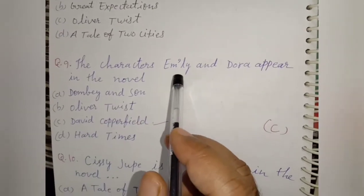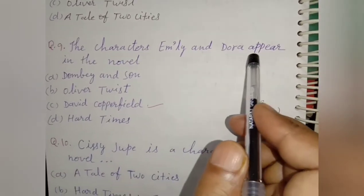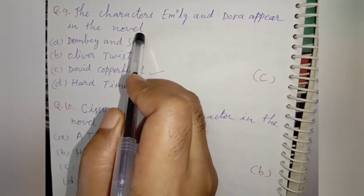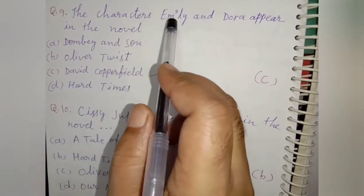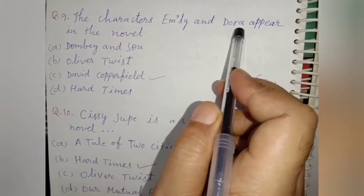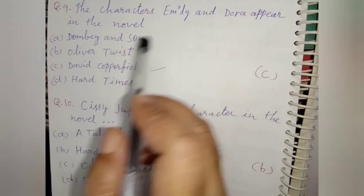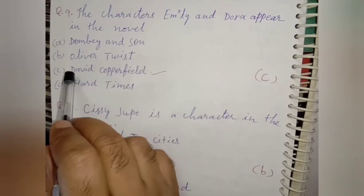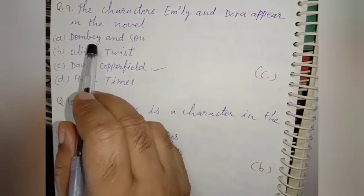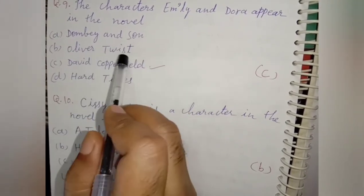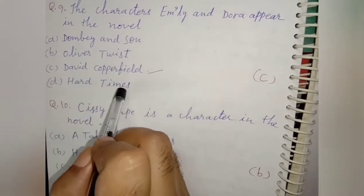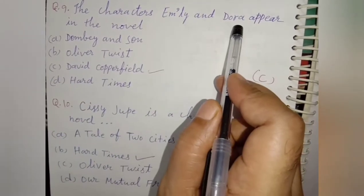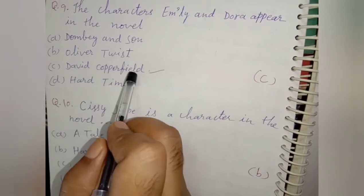Next question: The characters Emily and Dora appear in which novel of Charles Dickens? These characters appear in David Copperfield, so option C is correct. Other options include Dombey and Son, Oliver Twist, and A Tale of Two Cities, but the right option is David Copperfield.